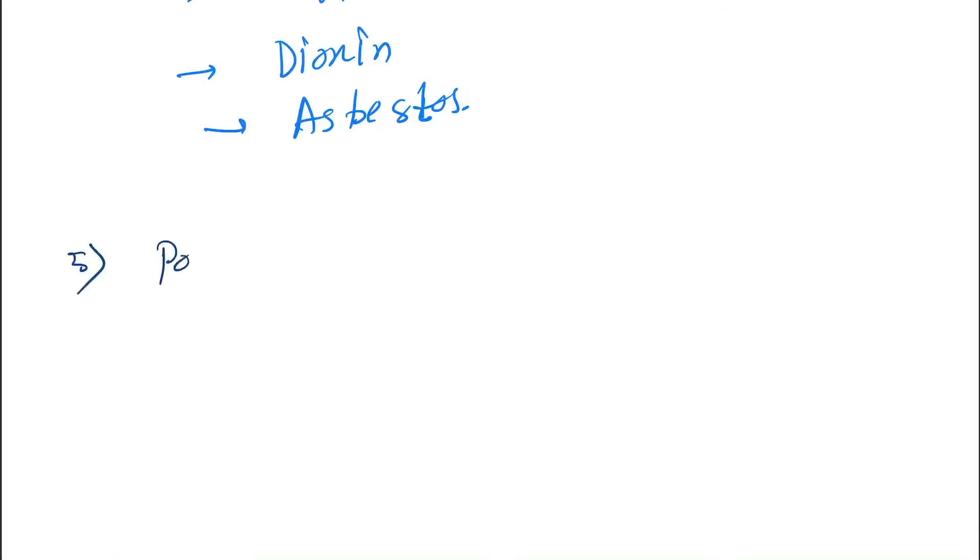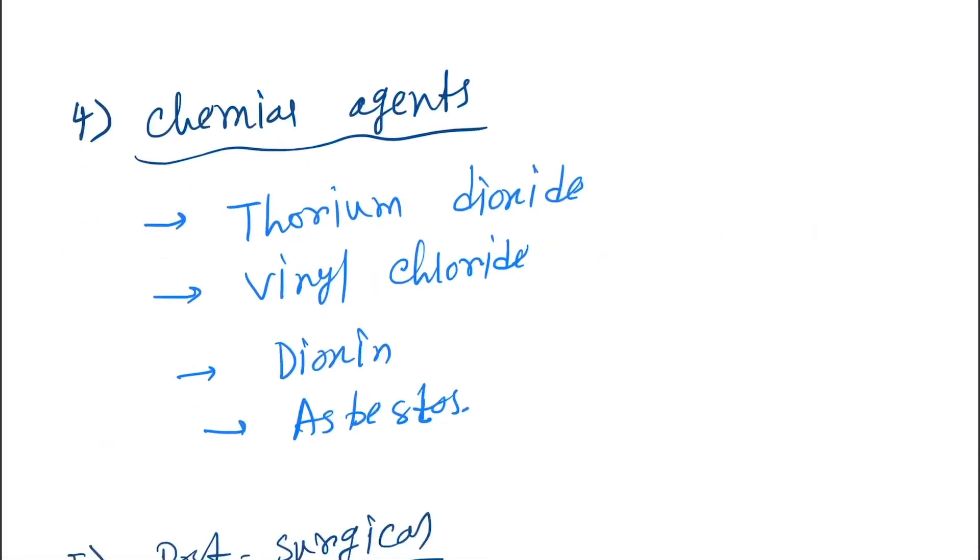Number five is post-surgical. The cause is biliary enteric anastomosis. These are the risk factors of cholangiocarcinoma.